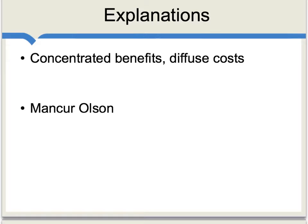Perhaps the most common general explanation for tariffs is public choice theory, which refers to the distinction between concentrated benefits and diffuse costs. Imagine a small group of producers, each of whom would gain individually a large amount from a tariff — they will find it relatively easy and profitable to push for imposing it. At the same time, the costs are borne by 310 million American consumers. Those costs are quite diffuse; each individual loses only a small amount and won't find it worthwhile to organize against the tariff.